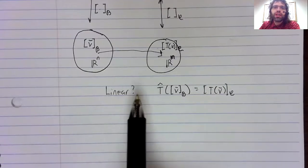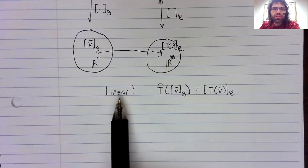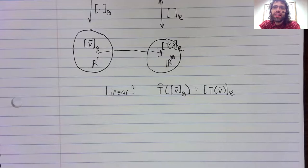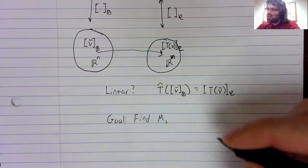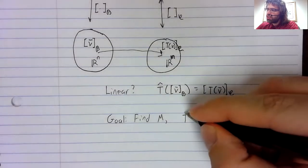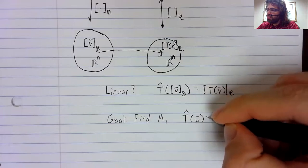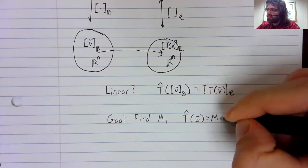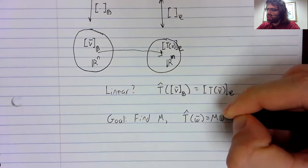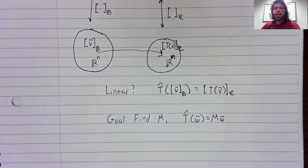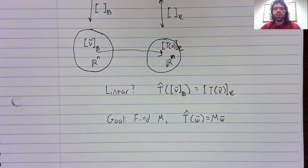The way that we're going to show that this transformation is linear is by finding a matrix such that applying this transformation is the same as multiplying by the matrix. We'll do that in the next set of notes and the next video.